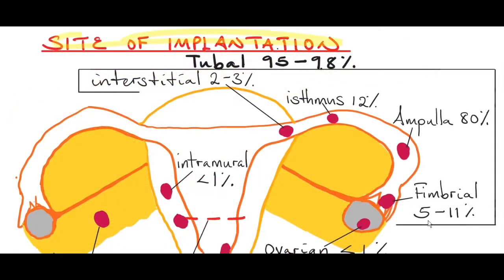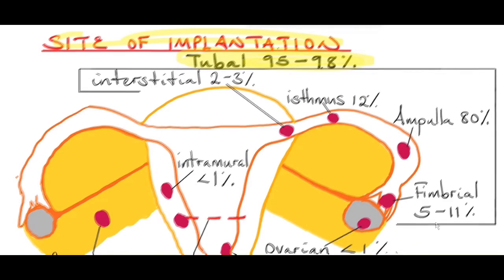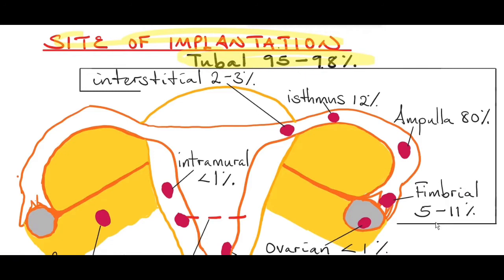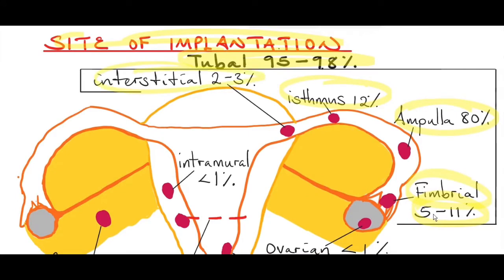Site of implantation. The most common ectopic pregnancies are tubo-ectopic pregnancies, which account for 95-98% of pregnancies. This is where a fertilized egg implants inside the fallopian tube instead of the uterine cavity. The most common site of implantation in the fallopian tube is the ampulla region, which accounts for 80% of cases. The next common site is the isthmus, which accounts for 12% of cases. The next site is the fimbrial end, also known as the infundibulum, which accounts for 5-11% of cases. The next site is the interstitium, which accounts for 2-3% of cases.